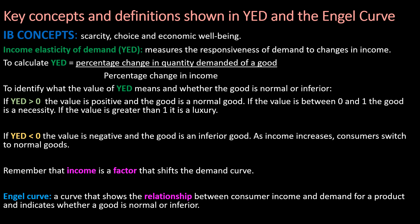Let's start with a few key concepts and definitions around YED and the Engel curve. Relevant IB concepts include scarcity, choice, and economic well-being. Income elasticity of demand measures the responsiveness of demand to changes in income. To calculate YED, we work out the percentage change in quantity demanded of a good and divide that by the percentage change in income, which I've applied in the next slide to identify what the value of YED means.